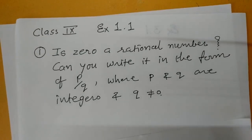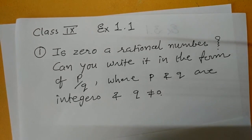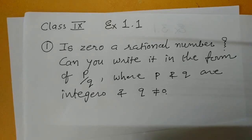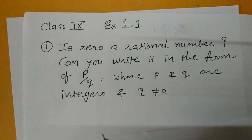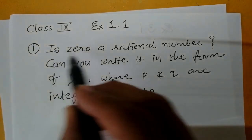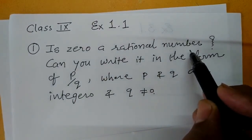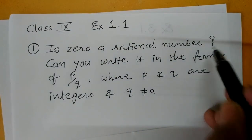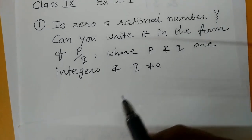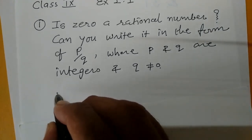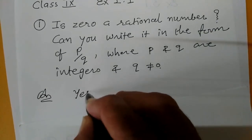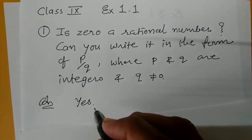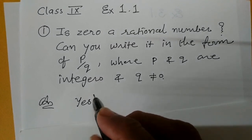Hello friends, I hope that you have prepared part one of this chapter. Today we are starting Exercise 1.1, question number one. The question is: Is zero a rational number? The answer is yes — zero is a rational number.